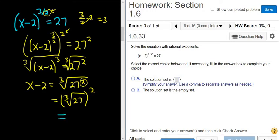This equals, well, cube root of 27 is 3, because 3 times 3 times 3 is 27. So this is 3 squared. We end up with x minus 2 equals 9.